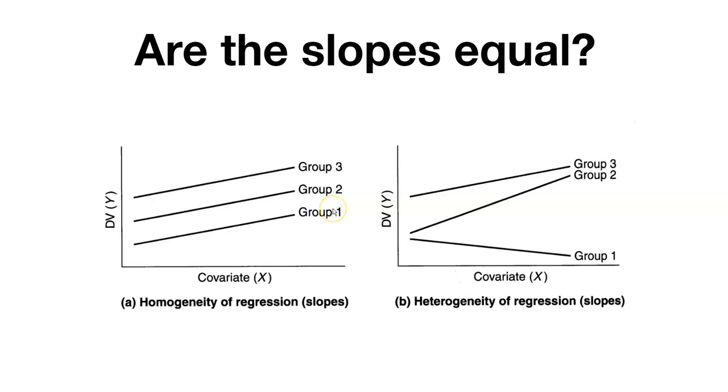Group 1, group 2, and group 3 all have equal slopes. In contrast, you can look on the right and you can see this is the heterogeneity of regression slopes. The slope values between group 1, 2, and 3 are not equal. And so we can do statistical tests to assess whether or not these slopes are equal across different values.